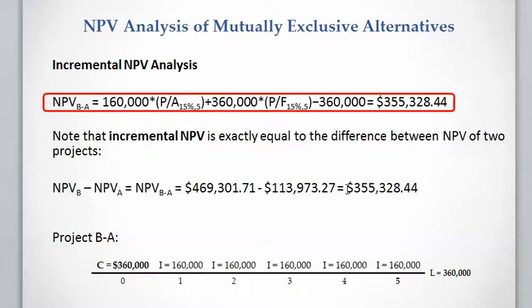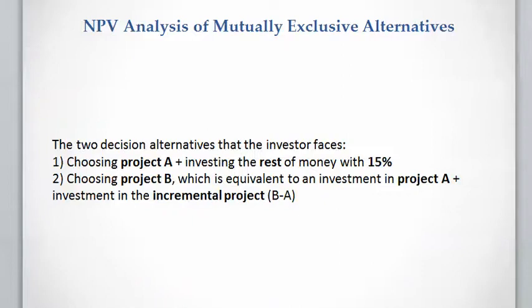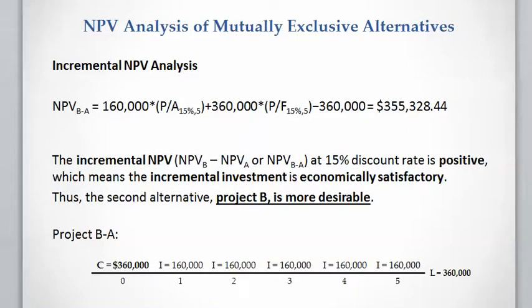The difference directly shows us the NPV of the incremental cash flow. We have two alternatives: choosing Project A and investing the remaining money at the 15% minimum rate of return, or choosing Project B, which is equivalent to investing in Project A plus the incremental project B minus A. Because the incremental NPV at a 15% discount rate is positive, the incremental investment is economically satisfactory, meaning Project B is the more desirable scenario.